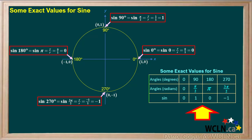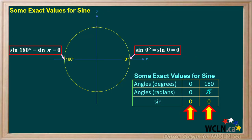This table summarizes the values of sine for these four angles in degrees and radians. Notice that zero degrees or zero radians and 180 degrees or pi radians both have a sine equal to zero. Here's a simplified version of the diagram and the table showing only the two angles for which sine equals zero. It's very important to become familiar with the angles for which sine is equal to zero.